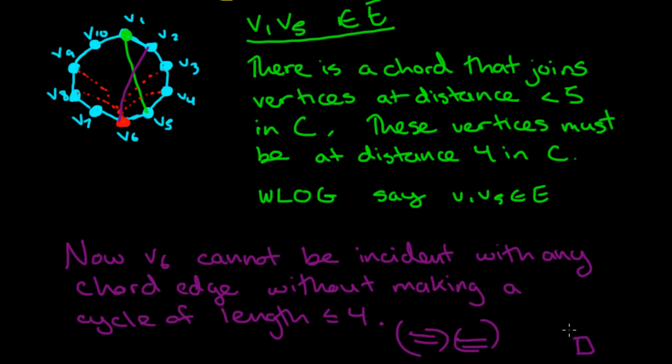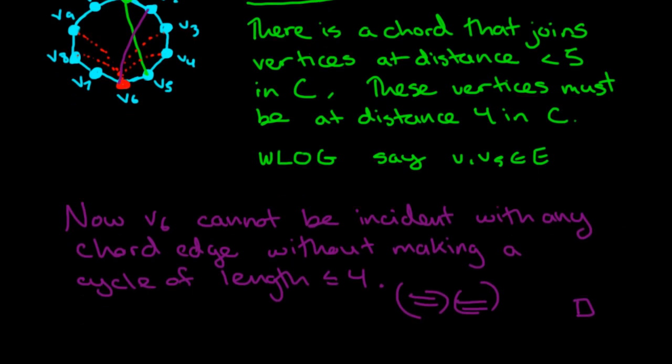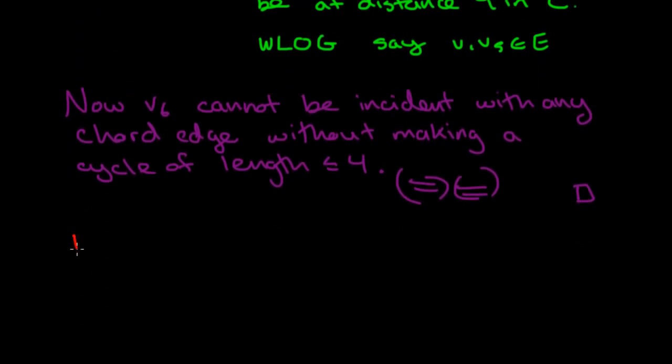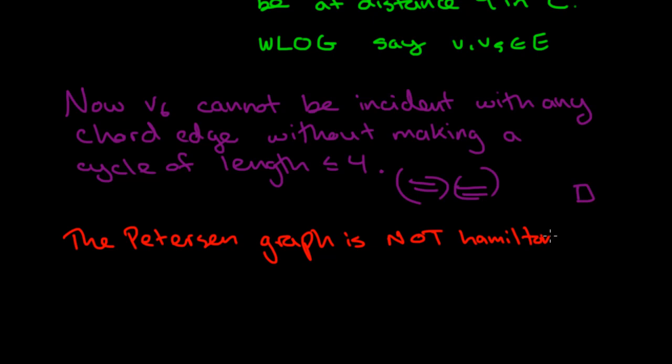Why does it work? It's because we supposed that there was a Hamilton cycle in the Petersen graph and then we derived a contradiction. So we can conclude by saying that the Petersen graph is not Hamiltonian. It means it does not have a Hamilton cycle even though it has a Hamilton path.